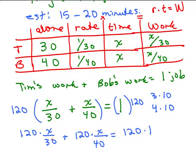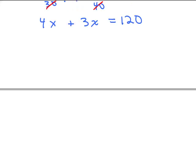So if I cancel, this gives me 4. This gives me 3. So I get 4x plus 3x equals 120. So if I cancel our number, 7x equals 120. Divide both sides by 7, and we've got our x.